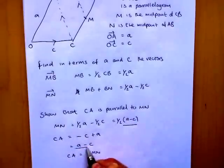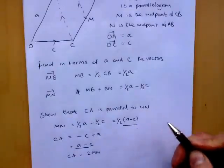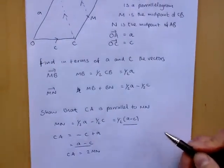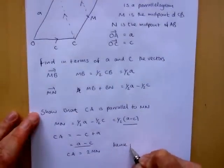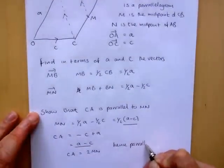So they both have the same component, a minus c. MN is simply half the distance, so they are parallel. So we could just write hence parallel to finish that off.